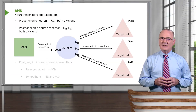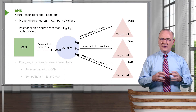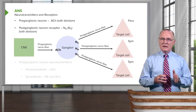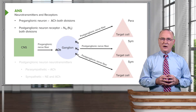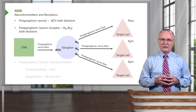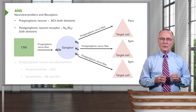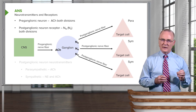The postganglionic neuron receptor — with that cell body in the ganglion — will be the same for all systems of the autonomic nervous system, both parasympathetics and sympathetics, and that is the nicotinic receptor that binds to acetylcholine.